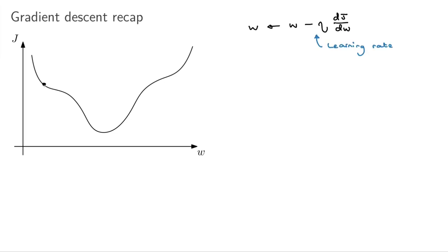So in this specific case, if we're at this W, then we can calculate the derivative, which would be a line like that. That has a negative slope. This is negative, which means we will move W upwards. And then maybe we move here.